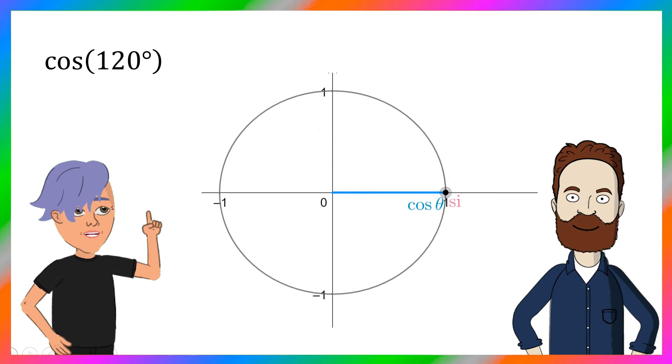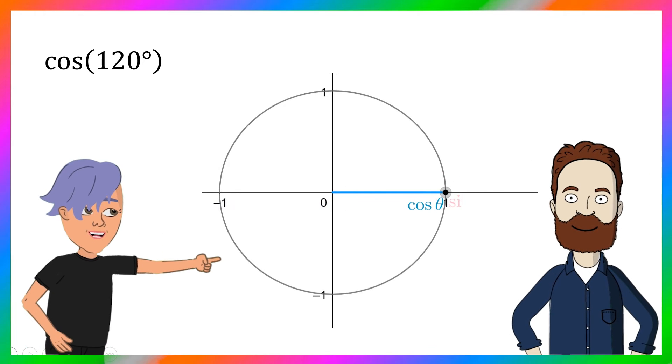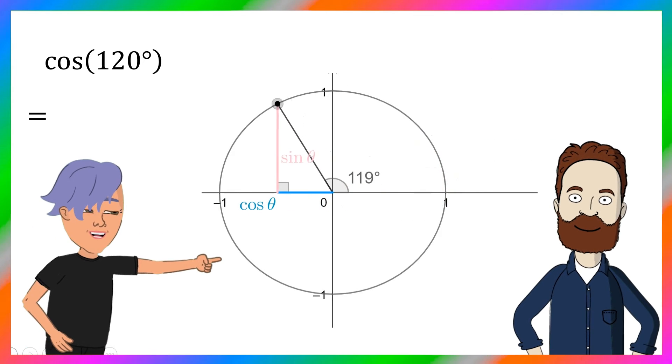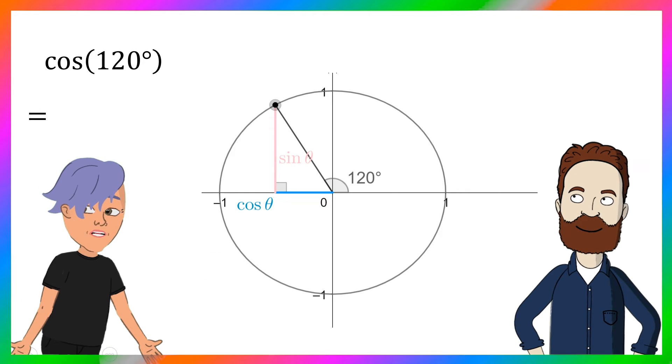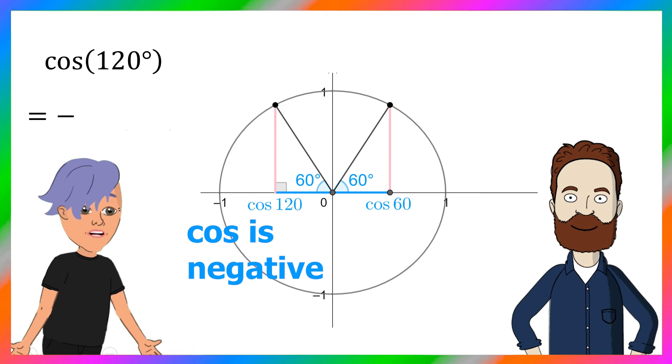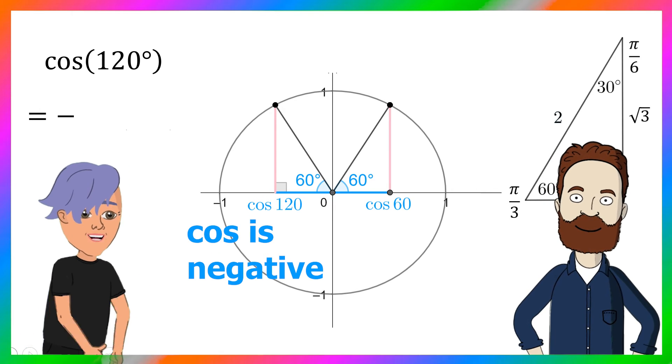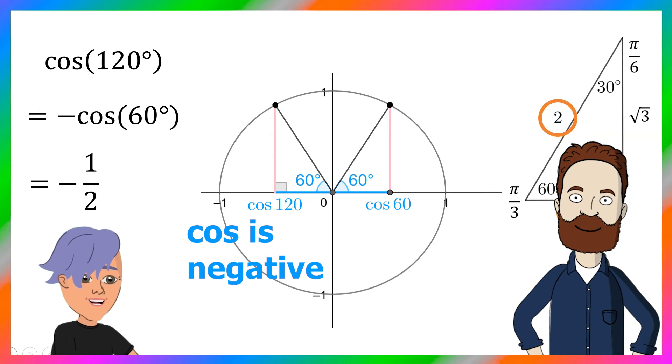Now to work with bigger angles, I draw a unit circle, draw them in. I check if sine, cos, tan are negative or not, and then I use my triangles again.